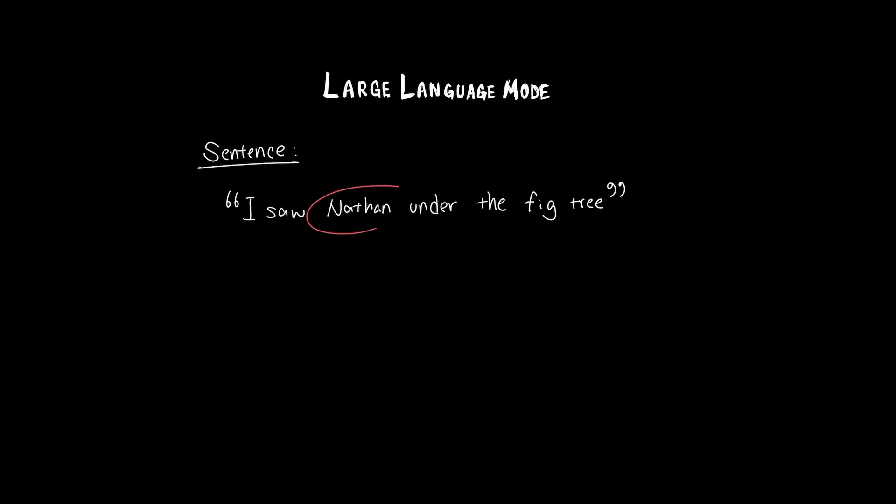For example, if you start the sentence with Nathan, because you understand how the word Nathan relates to, let's say, the fig tree, you can actually formulate a sentence that says Nathan was under the fig tree. And this seems like a good way to extract meaning from the sentence.